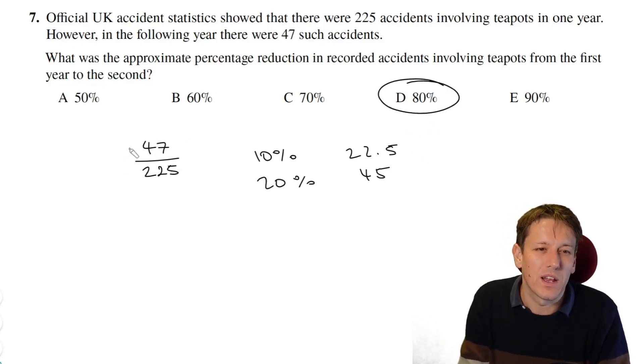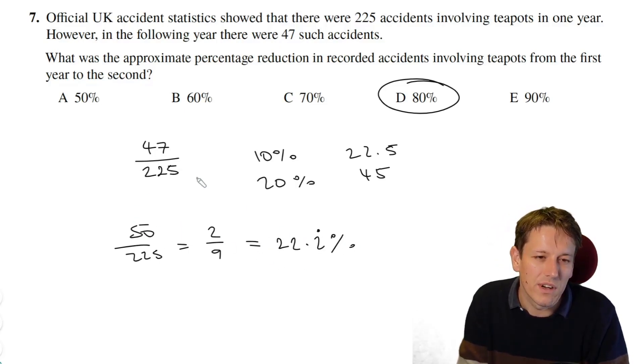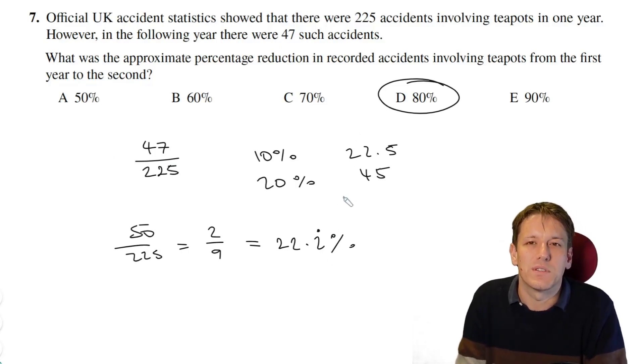You could also do this by rounding 47 down to 45 first, or up to 50. You could do 50 over 225 is 2 ninths or something, which is, so that's 22.2 recurring percent, and then you could say, oh, it's a bit too much, so we've rounded up, so if I go back down to 47, it'll be 20, 20% will be the closest again. So however you get there, the answer is D, 80%.